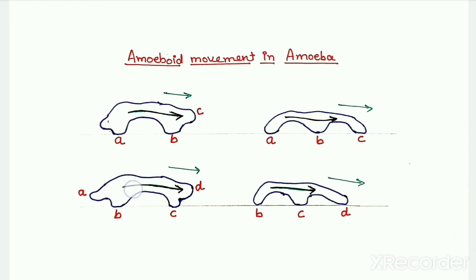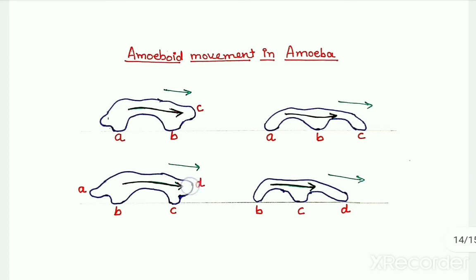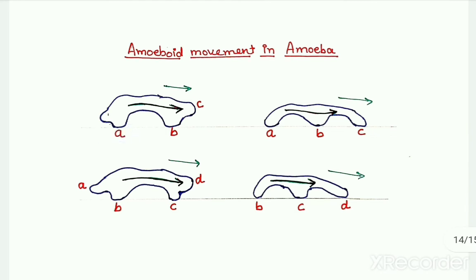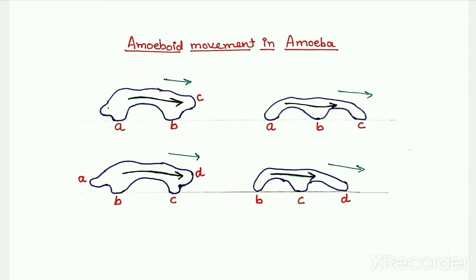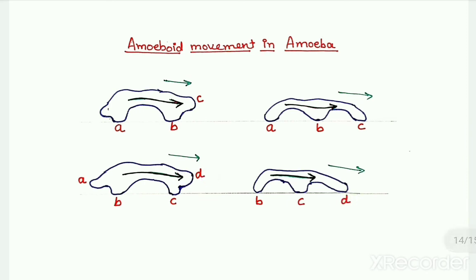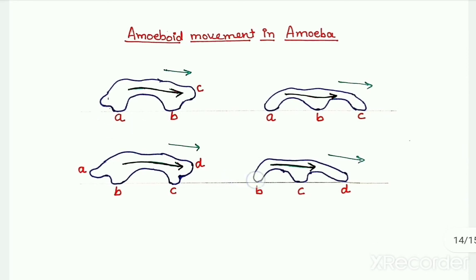Again, the plasma sol keeps on moving forward, and again a new pseudopodium is formed here. But one more thing occurs: this old pseudopodium, say this A pseudopodium, detaches from the substratum. Again this new pseudopodium attaches, and by this time the first pseudopodium is completely vanished.